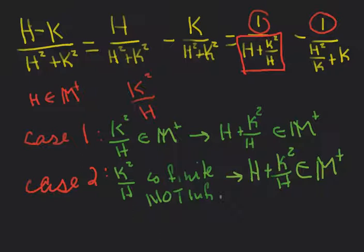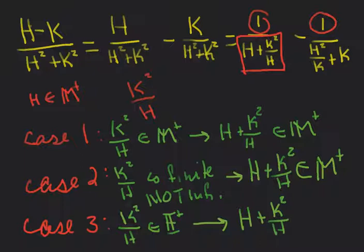Case 3: k squared over h is an infinitesimal. But in that case, same as before, h plus k squared over h is still positive infinite. So we weren't able to determine what k squared over h was, but it turns out we don't need to. No matter what value it is — any hyperreal number — when we add it to an infinite number, it stays infinite.